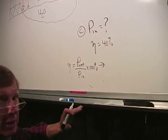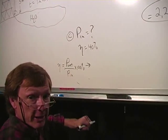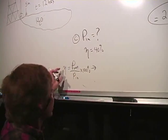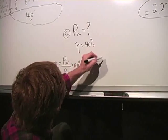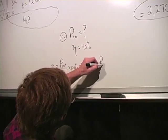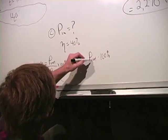Efficiency is output power over input power times 100%. If I solve for the input power, I've got to get it on top and by itself, which means I'll multiply both sides by the input power. And then I'll divide both sides by the efficiency. And I'll wind up with the input power is equal to the output power times 100% over the efficiency.